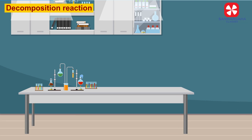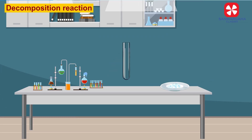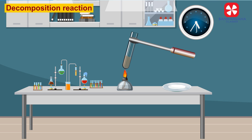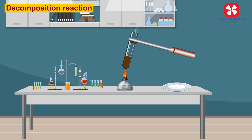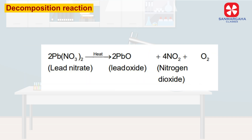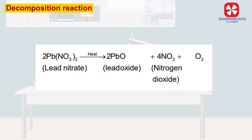For example, when we heat lead nitrate, it undergoes a decomposition reaction with the production of lead oxide, nitrogen dioxide, and oxygen gas. The chemical equation is: 2Pb(NO₃)₂ on heating gives 2PbO plus 4NO₂ plus O₂.